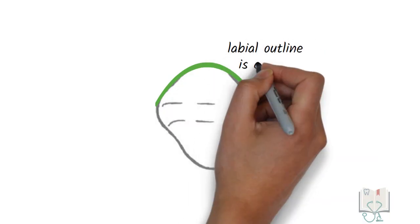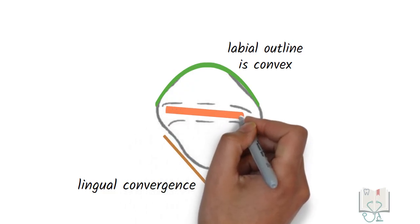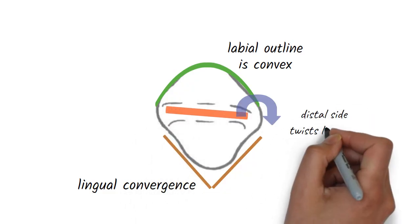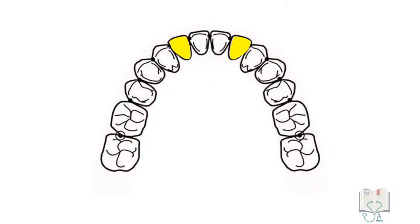The labial outline is smooth and convex and the lingual outline shows the lingual convergence. The incisal ridge is not straight. The distal half tilts lingually giving the crown a twist over the root. This is so that in a curving mandibular arch, the tooth has to maintain its mesial contact with central incisor and distal contact with canine.